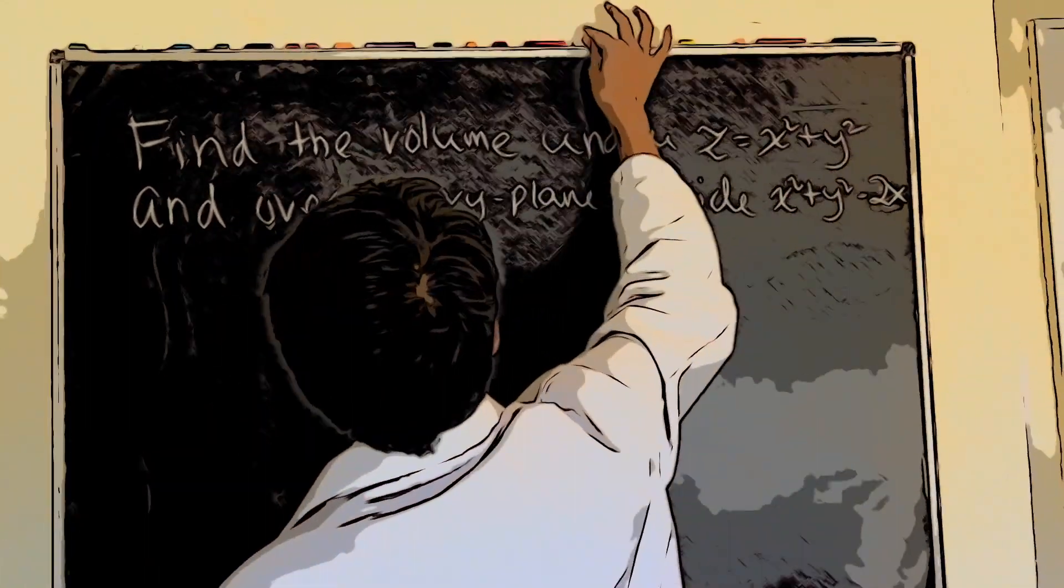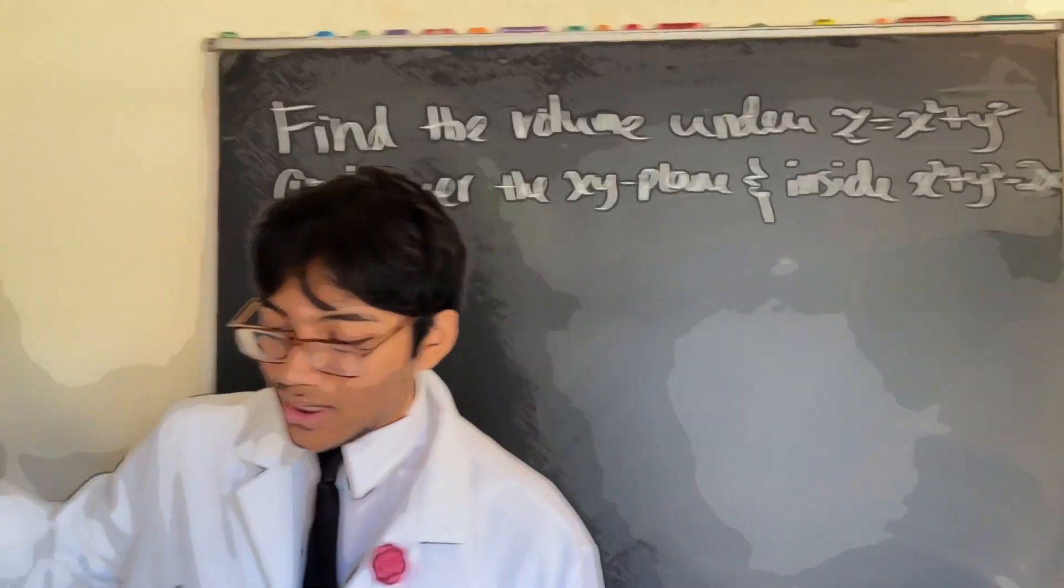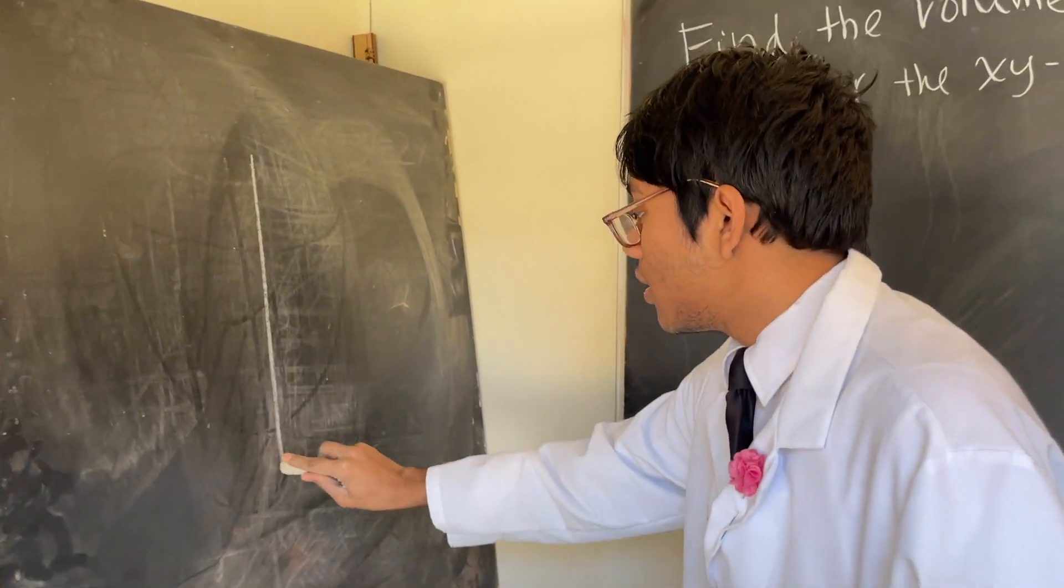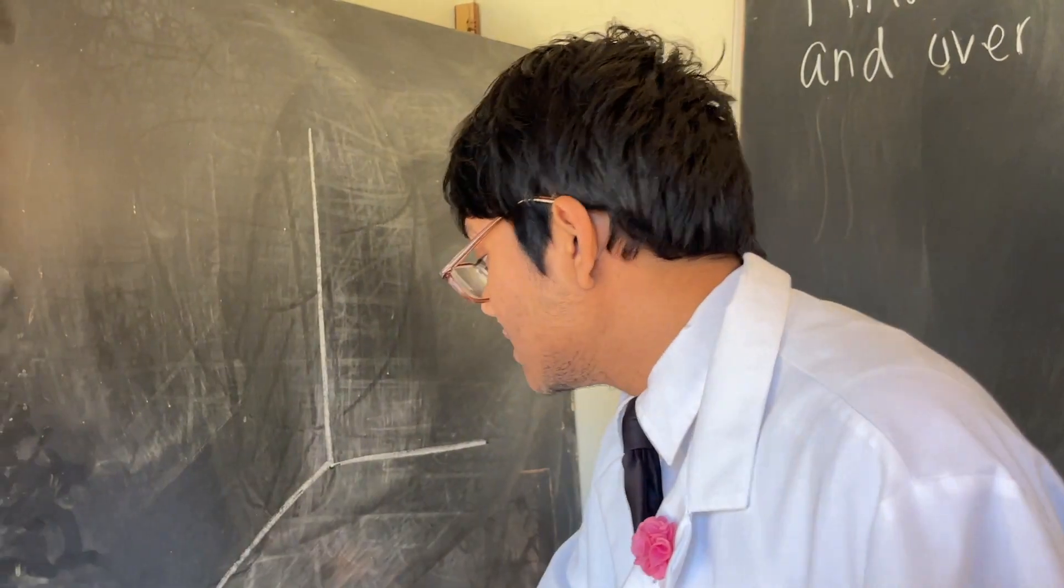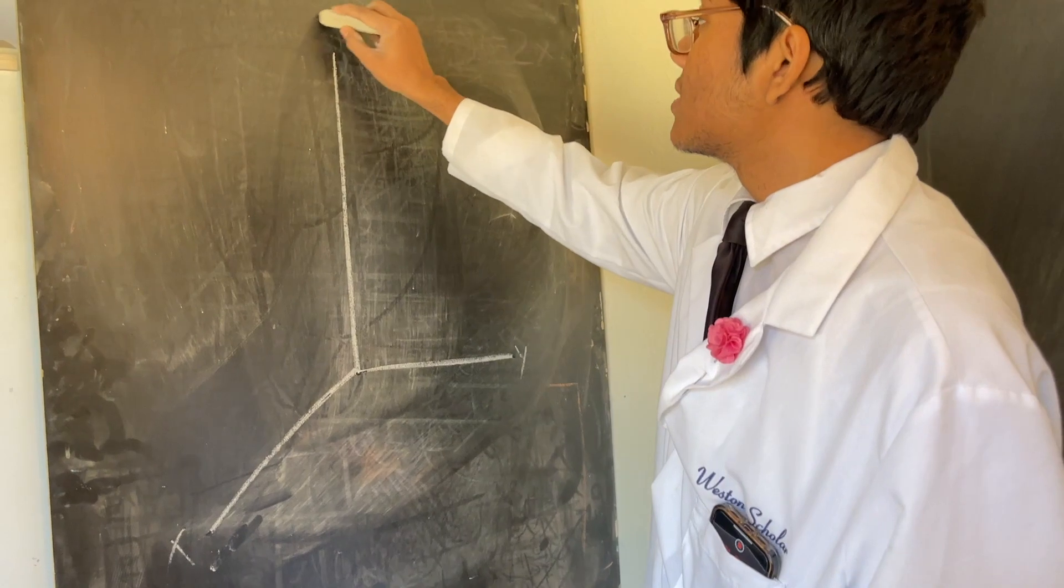So the first thing you want to do is visualize what you're integrating. We're going to visualize that right here over our blackboard. First thing, draw the x, y, and z coordinate planes. This is our x, here's our y, here's our z.